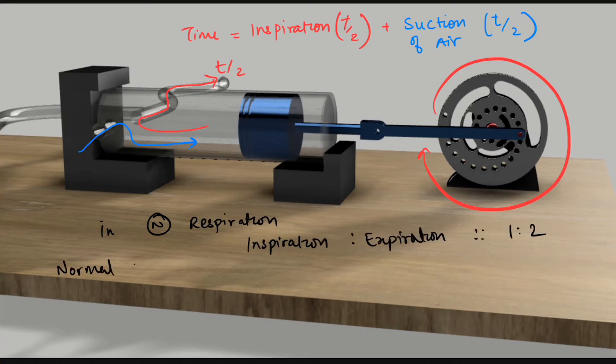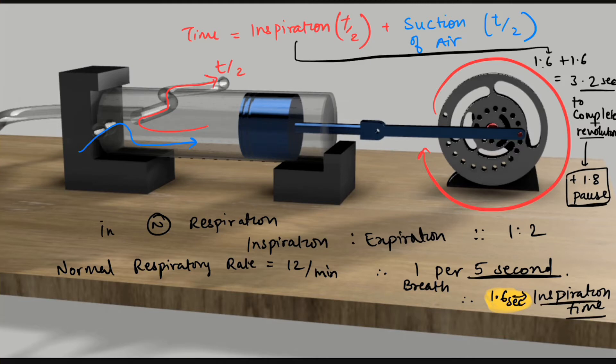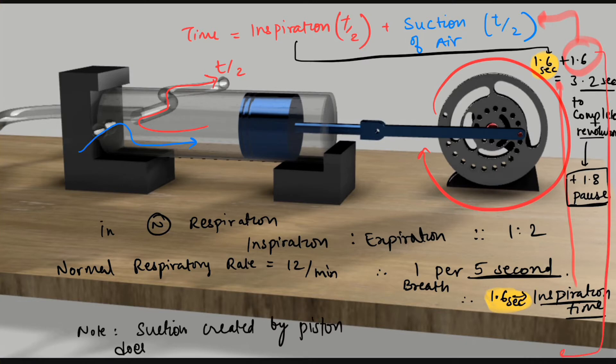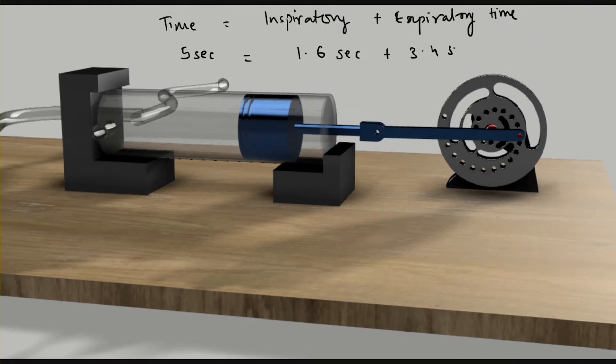The expiration here will be done by the passive recoil of the lung and chest wall, and it is normally twice as long as the inspiratory time. Thus, if the respiratory rate is 12 per minute, then each breath would be 5 seconds duration, out of which 1.6 seconds allocated to inspiration and 3.4 seconds would be allocated to expiration. The wheel will be needed to complete one rotation in 3.2 seconds, which is 18.75 rotations per minute, and 1.8 seconds should be the pause after each rotation.